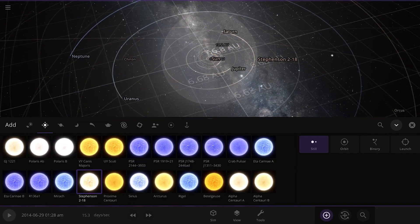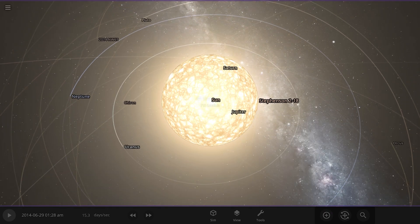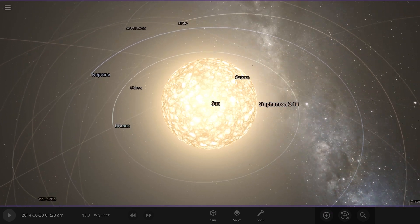If this star were to be plopped on top of the Sun, it would engulf the orbit of Saturn and everything in between. The Earth itself would be toast.